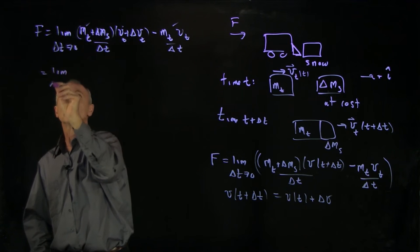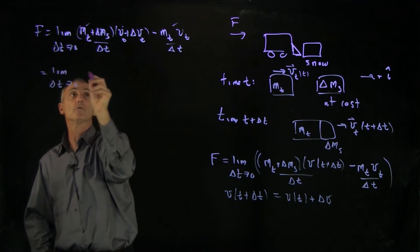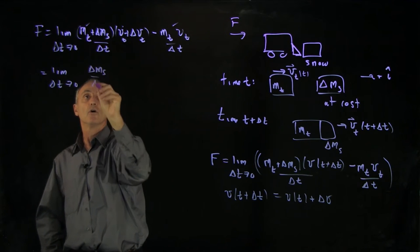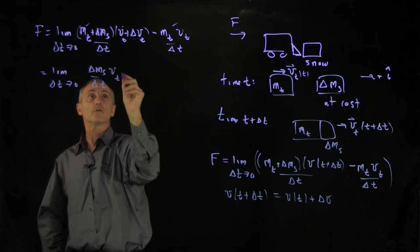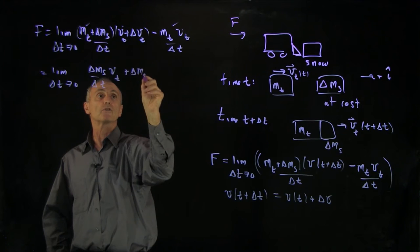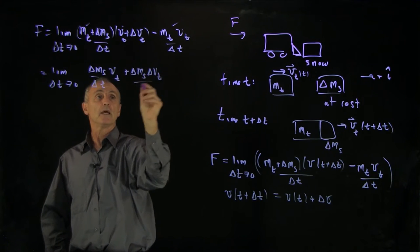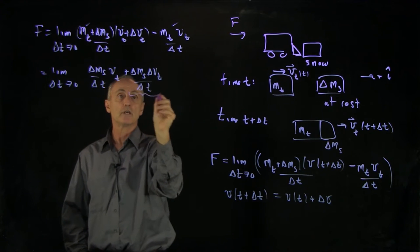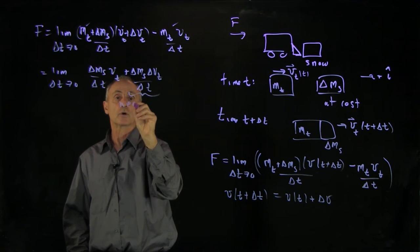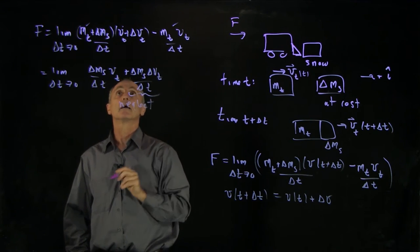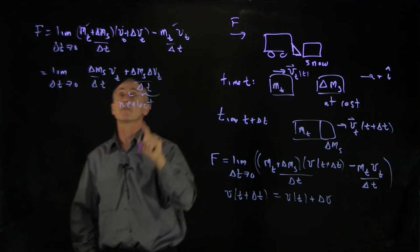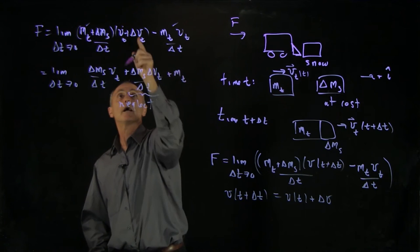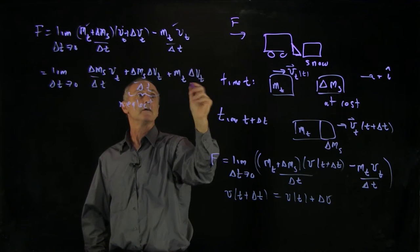And what we're left with is limit, as delta t goes to 0, of we have this snow term, delta ms over delta t times v truck. Now, here, we have a term, which we're going to analyze in a moment. It has two infinitesimal quantities. And this term is of second order, which we're going to neglect.